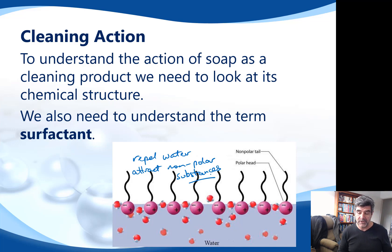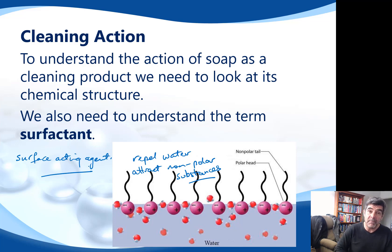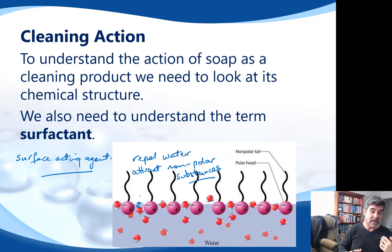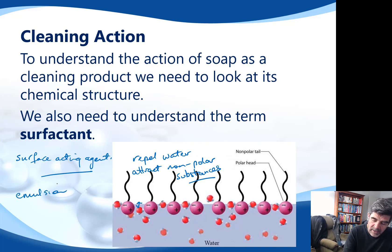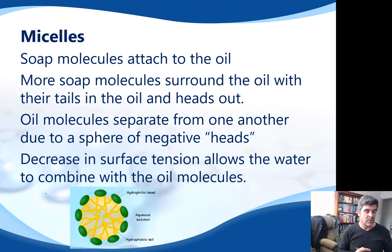Another useful term here is 'surfactant,' a contraction of 'surface acting agent.' If you put a couple of drops of food colouring in milk and then add a little detergent, that detergent changes the surface tension. It is that change in surface tension at the interface between these two substances that allows the miscibility to occur and allows us to form something called an emulsion.